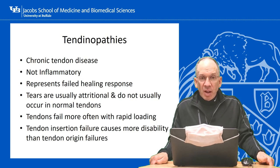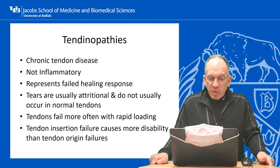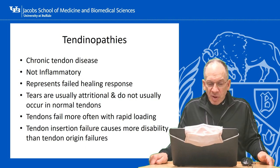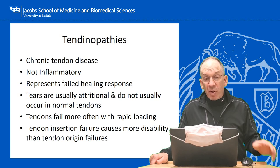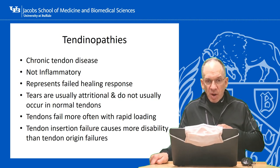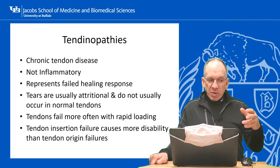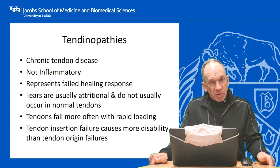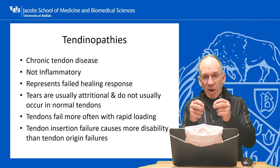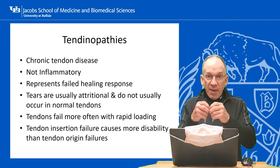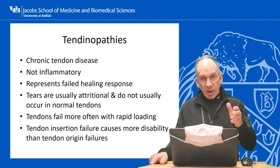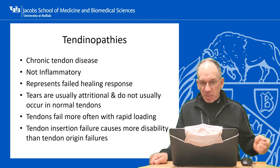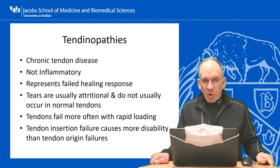Tendinopathies are chronic tendon disease. Like enthesopathies, they are not inflammatory — they represent the body's attempt and failure to heal a tendon that's having issues. The tears are usually attritional, and when you have a complete rupture, it's not through a normal tendon. People get ruptures through a tendon that has a weak area due to disease. Tendons fail more often with rapid loading — if you stretch an elastic structure really slowly you get more length, but rapidly it will fail. So a rapid eccentric load is a bad condition for a tendon.